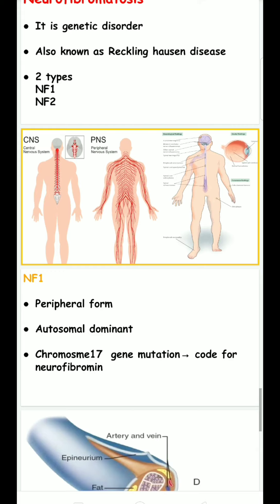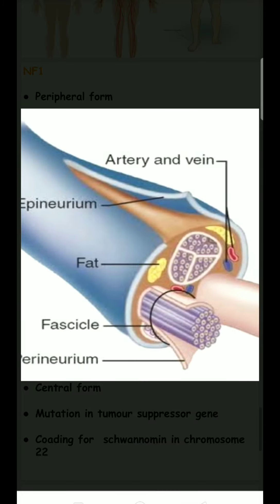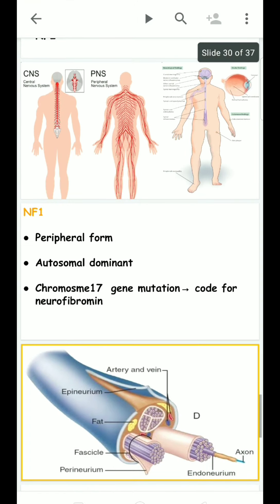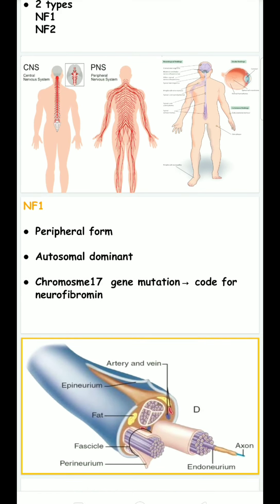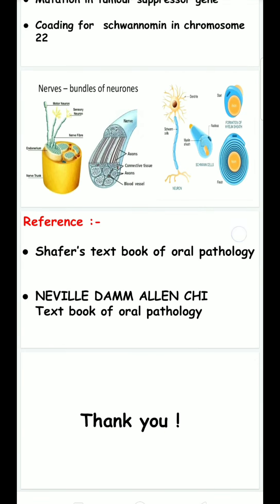Chromosome 17 codes for the tumor suppressor gene neurofibromin, which means this perineural fibroblast is controlled by the tumor suppressor gene neurofibromin coded by chromosome 17. In the central form, which is neurofibromatosis type two, there is a mutation in the tumor suppressor gene coding for schwannomin on chromosome 22.